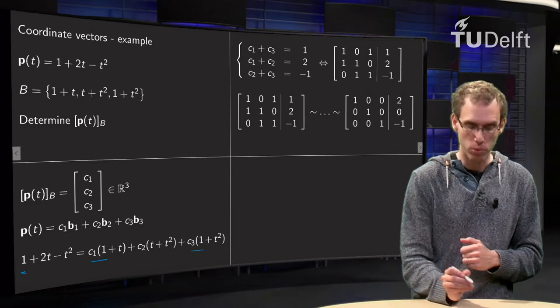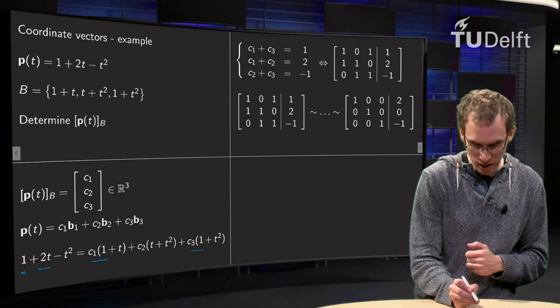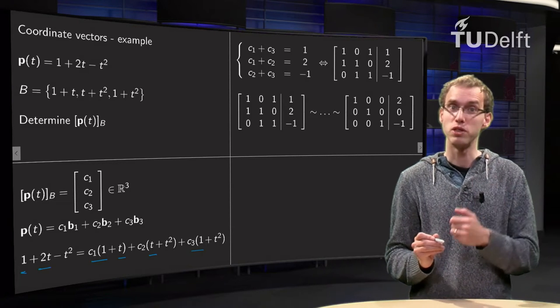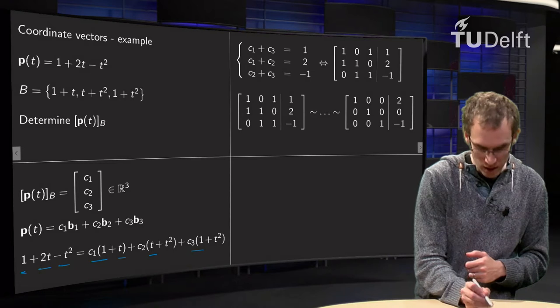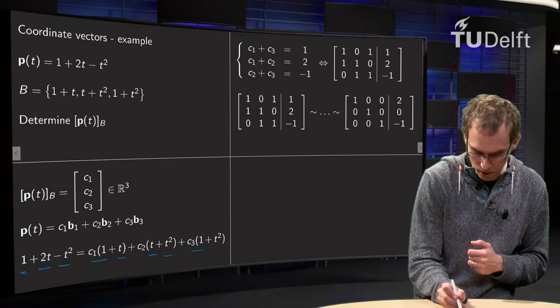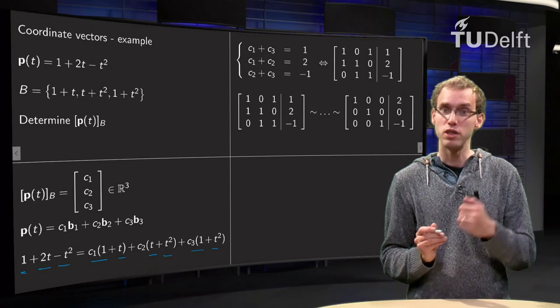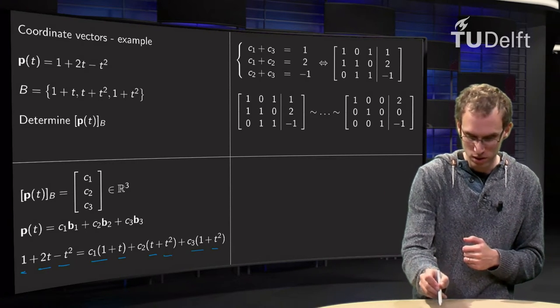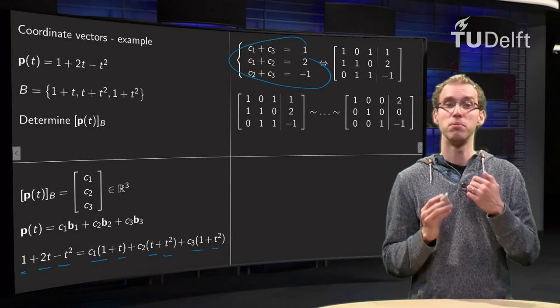So c1 plus c2 equals 2. And with t squared, the coefficient minus 1 equals c2 plus c3, so c2 plus c3 equals minus 1. And that yields this linear system over here.